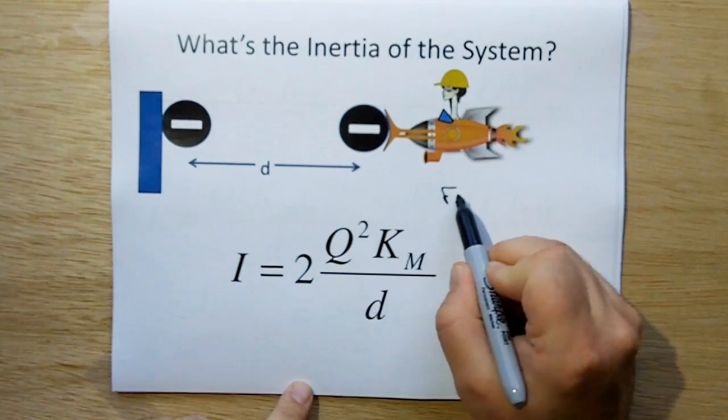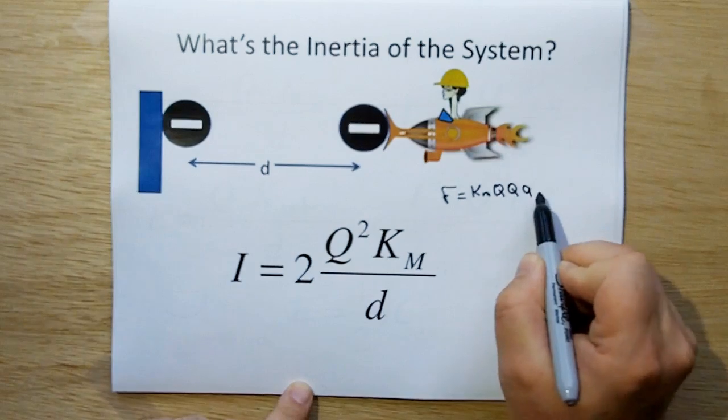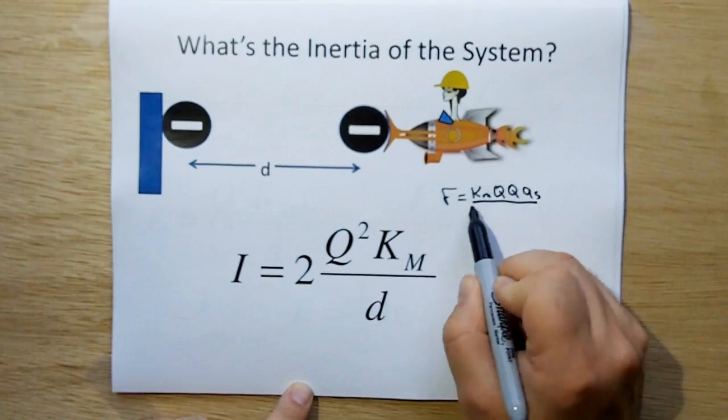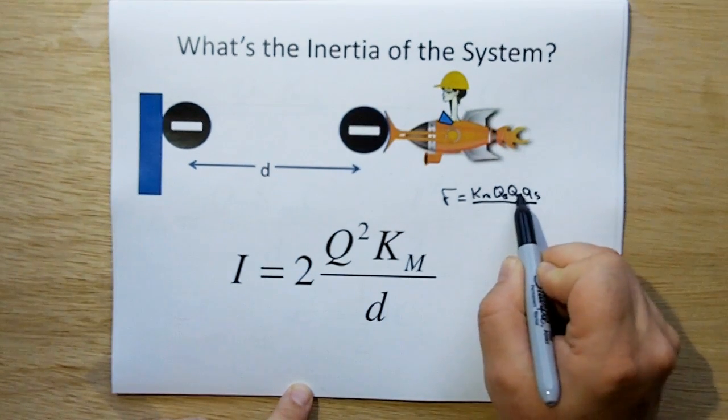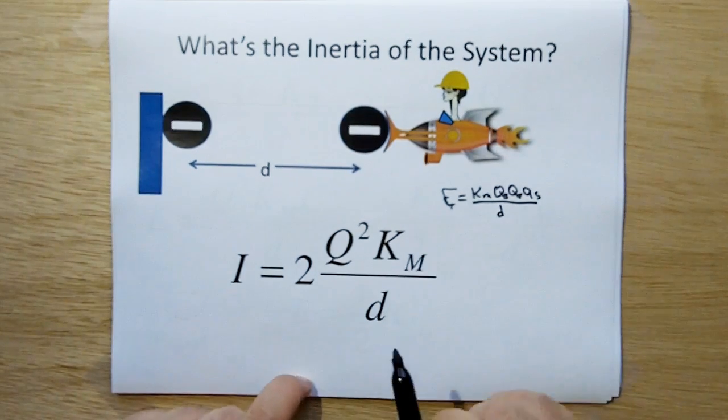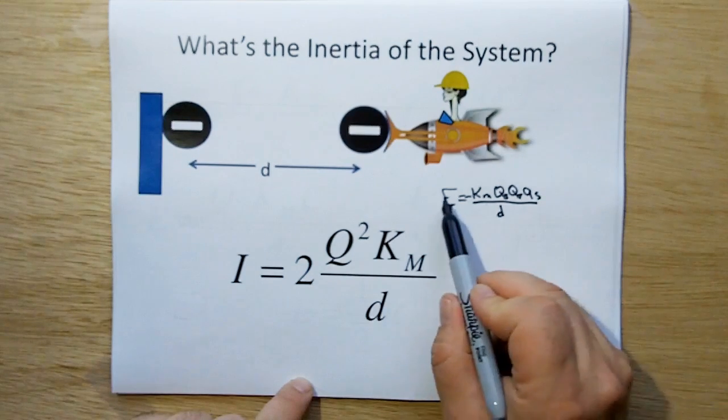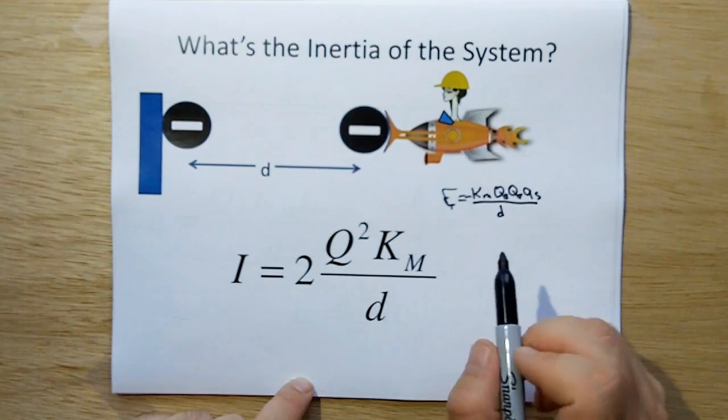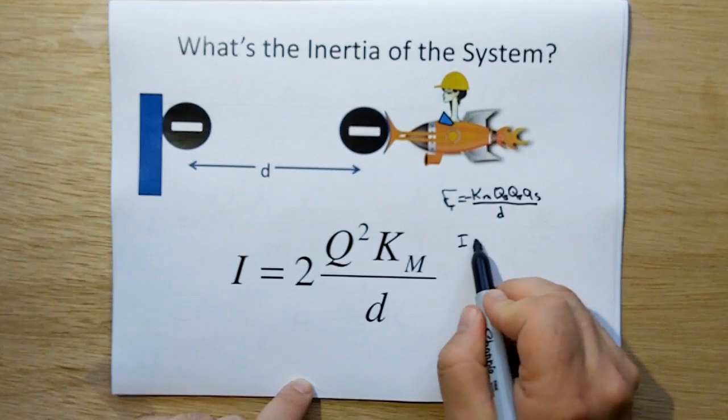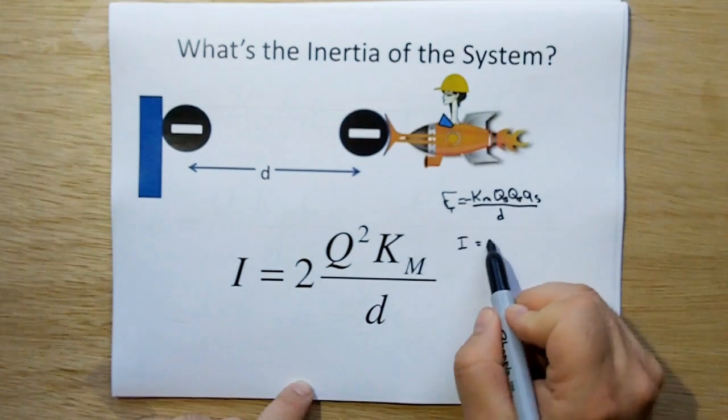Well, if we use new induction, which is force is equal to Km Q1 Q2 the acceleration of Q1, or acceleration of source, target, over the distance from source to target. And this is essentially F equals Ma. So if we divide force divided by acceleration is equal to inertia in kilograms, and we can drop the minus sign because that's just the way one relates to the other. Q squared over d.